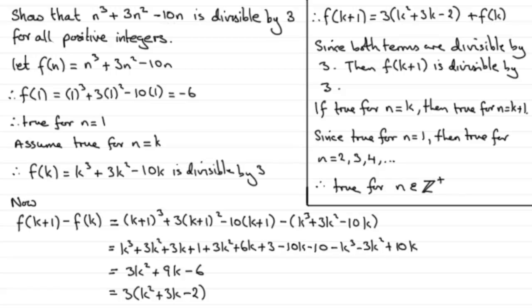When doing these divisibility tests, make sure you carry out the step f of k plus 1 minus f of k, then add f of k to both sides. You should find that the two terms you've got are then divisible by the number you're trying to prove divisibility by. Then just do your typical ending to problems like this. That brings us to the end of this tutorial.